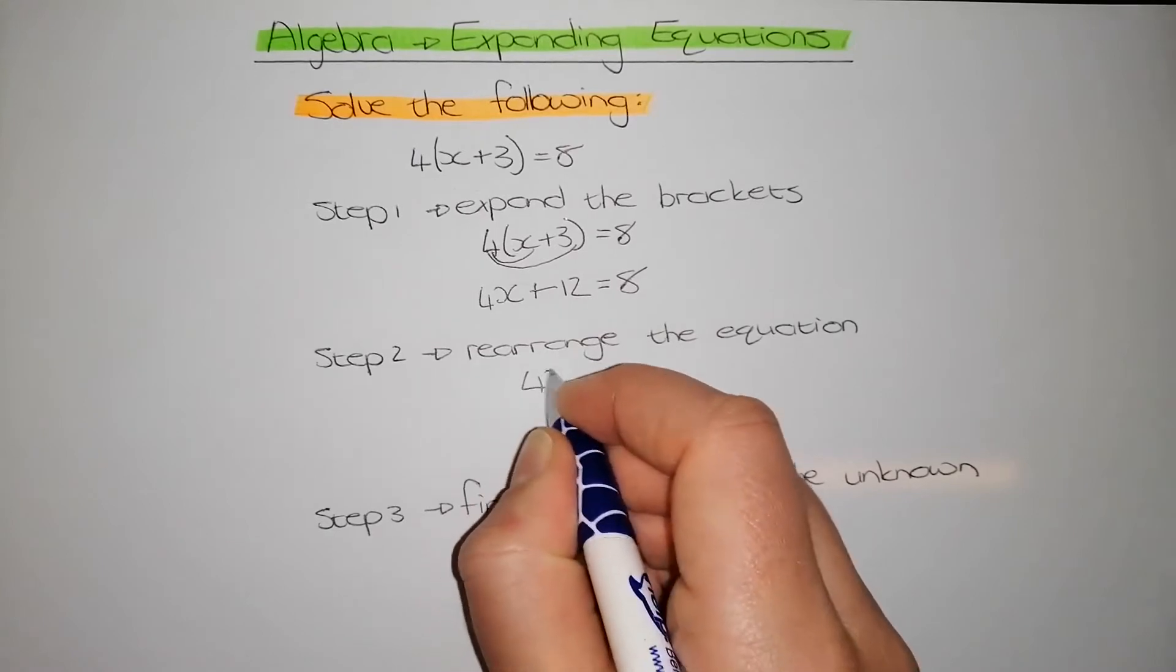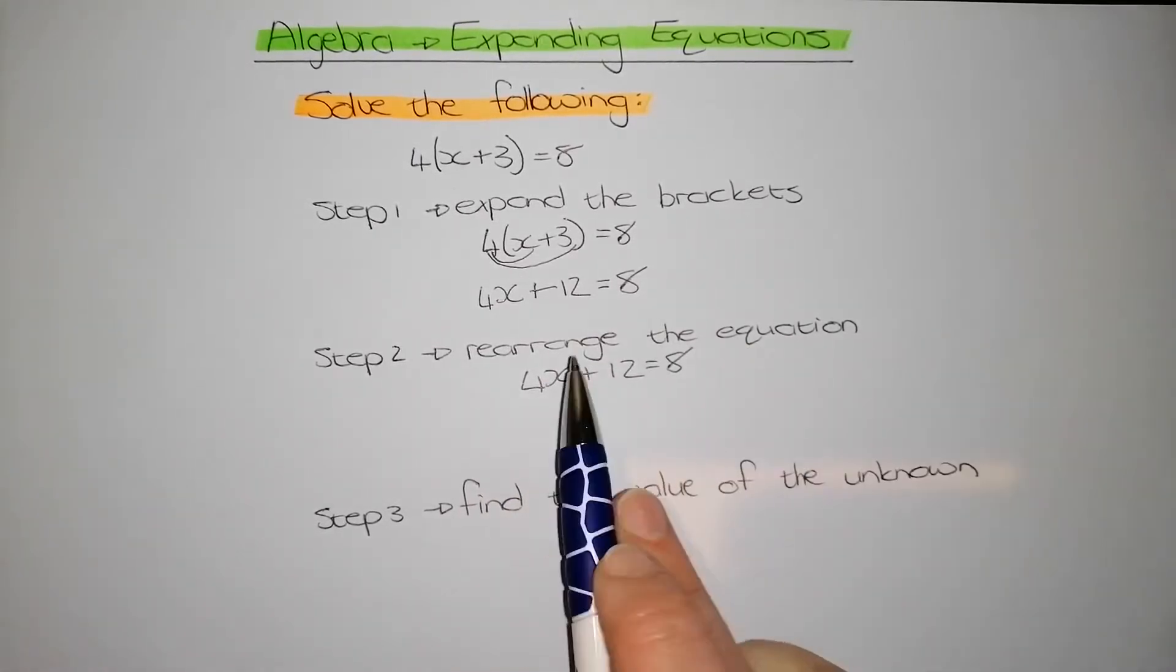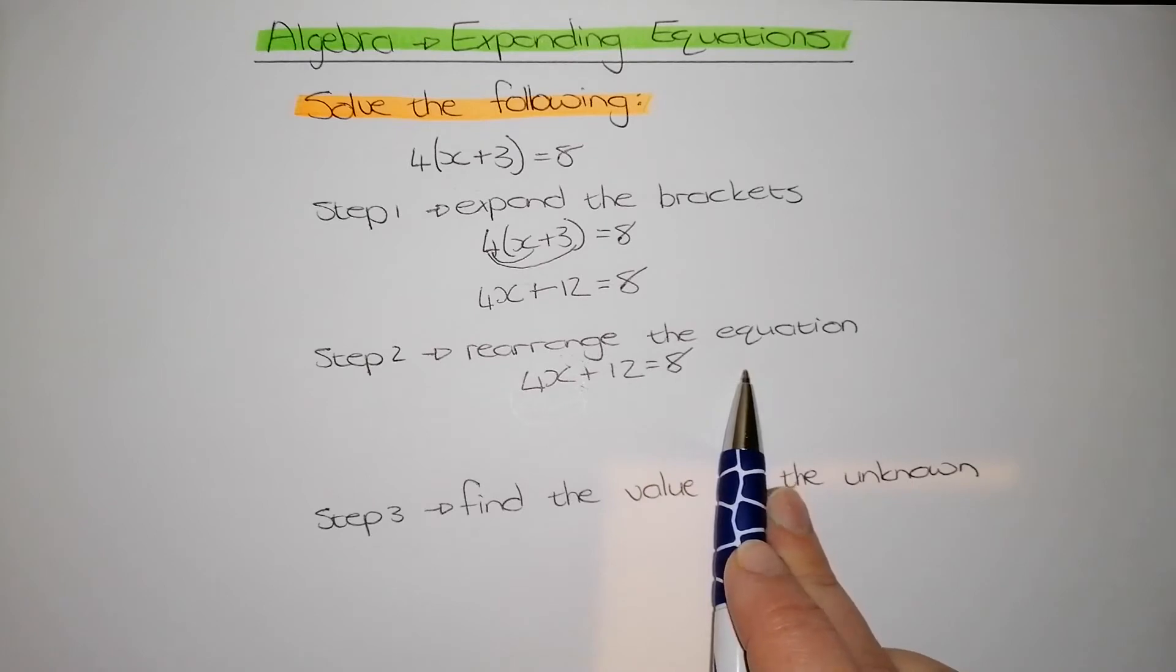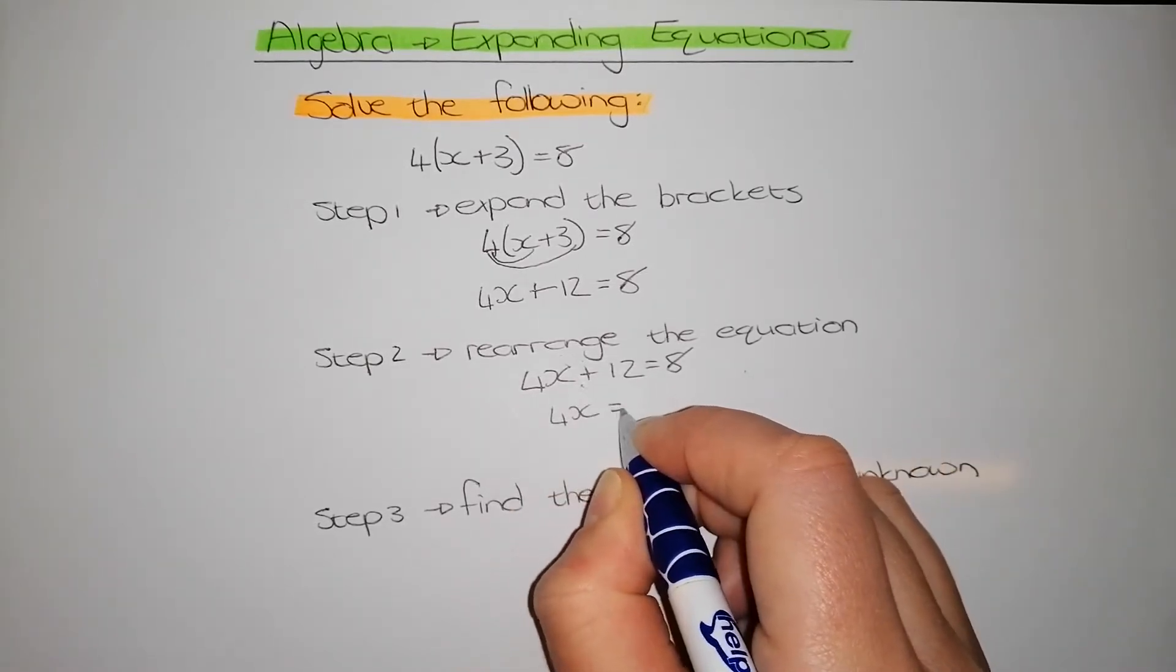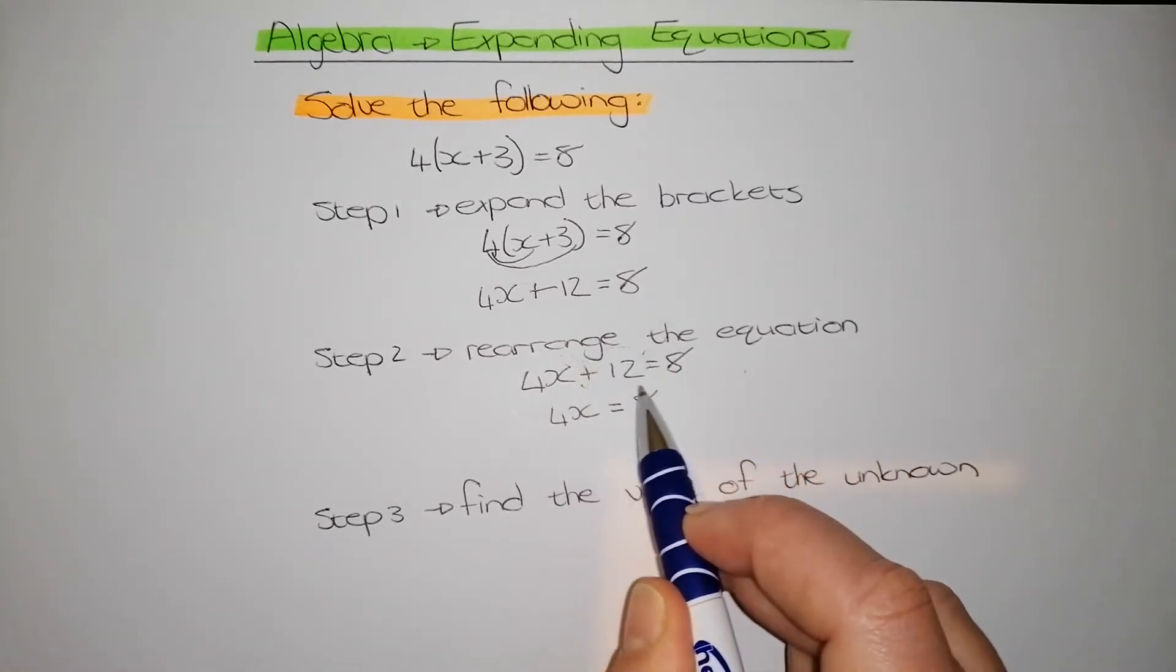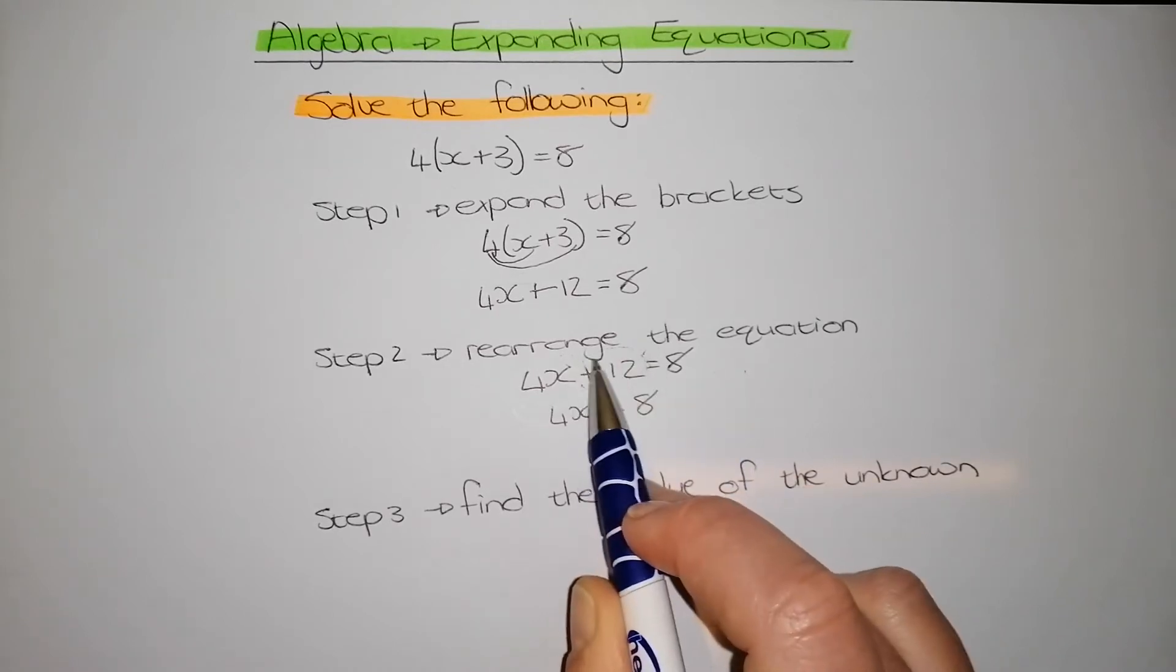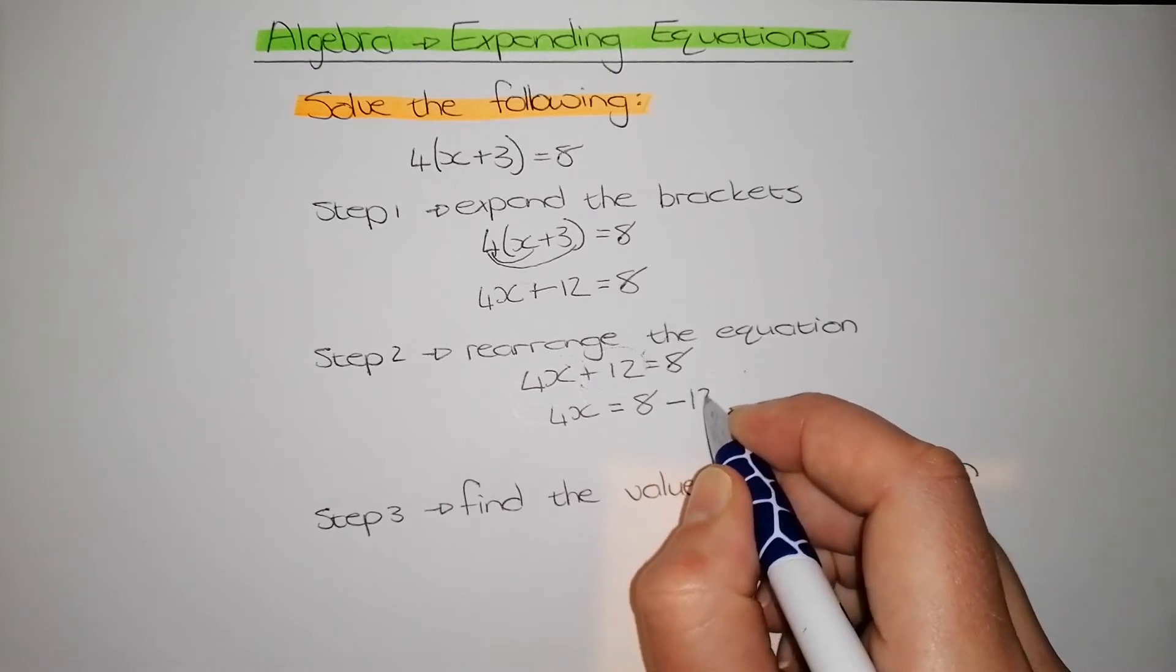So let's start by rewriting this. I already have my x on the left. So what I want to do is take this 12 over the equal sign. So I'm going to have 4x equal to... I'm going to leave my 8 there. Only thing I'm moving is this positive 12. When I take something over the equal sign, the symbol changes. So therefore, it becomes minus 12.